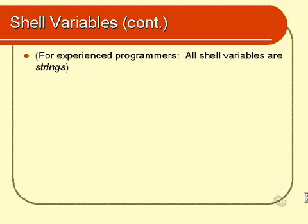For the experienced programmers amongst you who have already programmed in other languages, it's interesting to note that all shell variables are strings. If you don't know what a string is, it doesn't matter at this point. The point to note is that there are no integers, no numbers, in shell variables. You can certainly assign a value of 5 to a variable, but that 5 will be treated as the string 5, not the number 5. This means that you cannot do addition, subtraction, multiplication, or division using shell programming, because all shell variables are strings, not numbers.